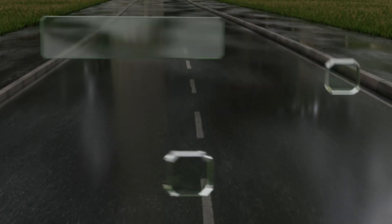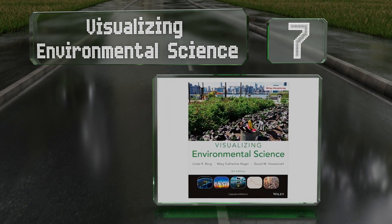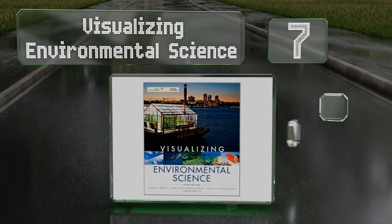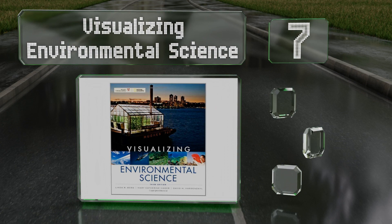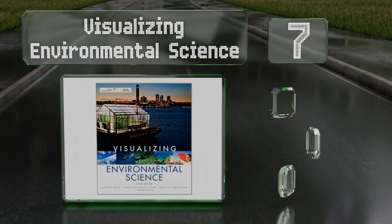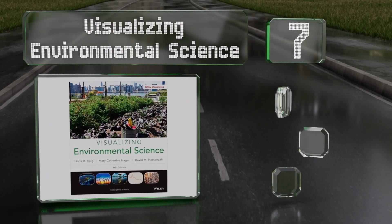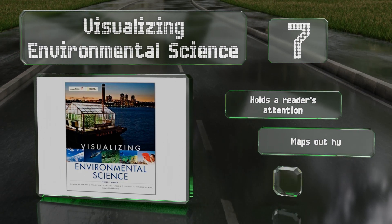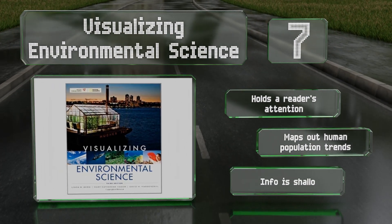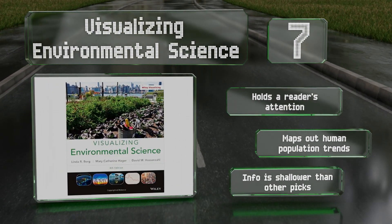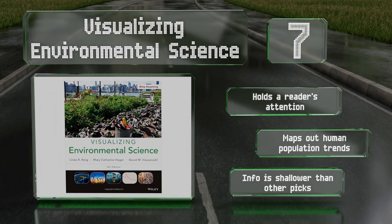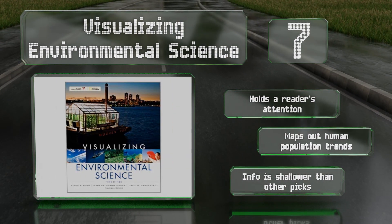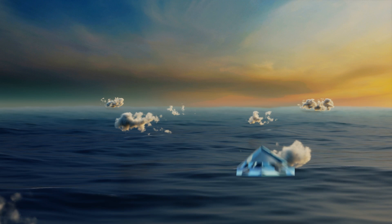At number 7, for all those learners out there who dread dull, long-winded blocks of writing, there's 'Visualizing Environmental Science.' It's packed with photos, graphs, illustrations, and more, all designed to open this subject up through visual pedagogy. It holds a reader's attention and maps out human population trends, but the information is shallower than other picks.